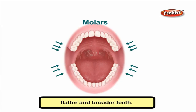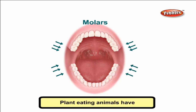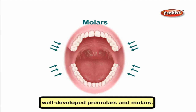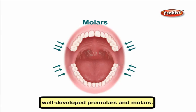Molars are bigger, flatter and broader teeth. There are twelve molars. They also help to crush and grind the food well. Plant-eating animals have well-developed premolars and molars. Eight molars appear first, and four more molars grow later between the age of 17 and 25. They are commonly called wisdom teeth.